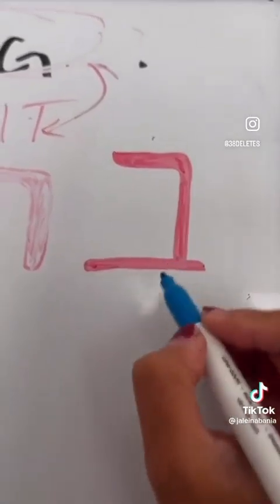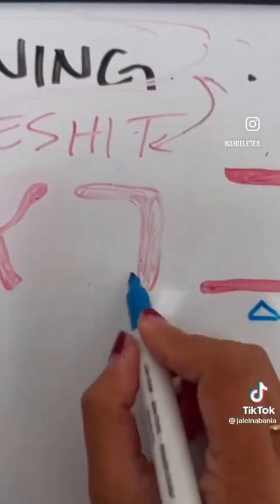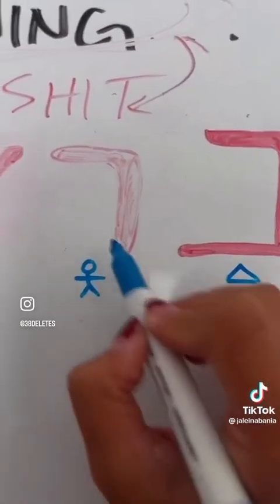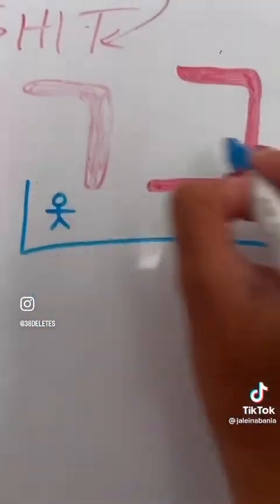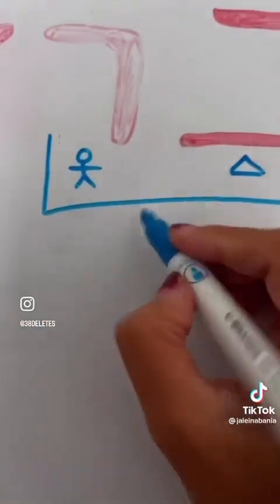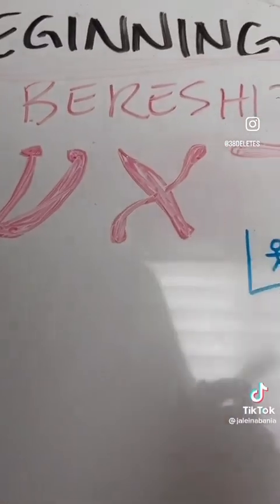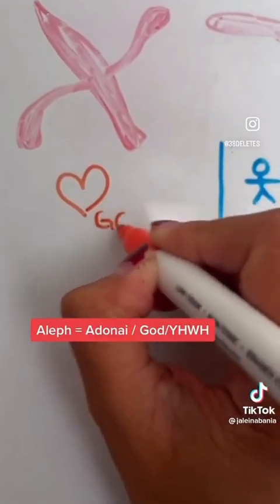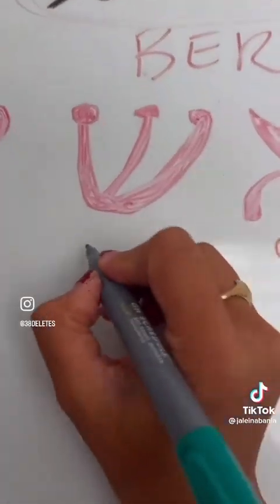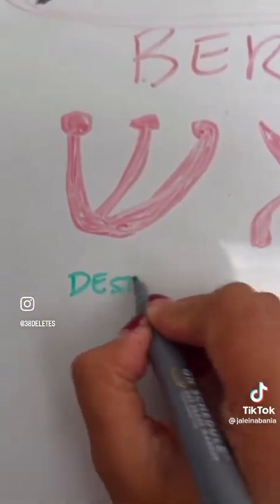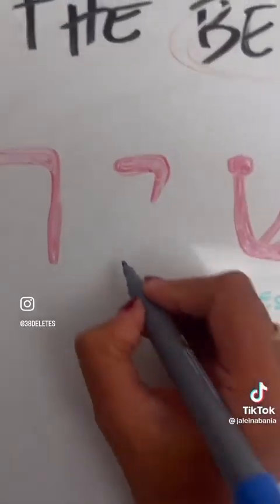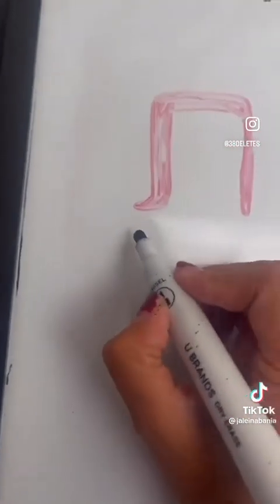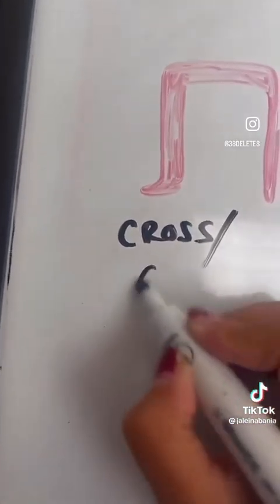The letter Beit, or B, means tent. And the letter Resh, or R, means the chief, the head chief. Together, B-R is read as bar, and together it means son. The letter Aleph is kind of like a vowel, and it means Adonai — so we'll do a heart for God. The letter Shin means to destroy — it looks like a claw, so that's how I remember it. This character means hand — the letter Yod. And this last character is Tav, which is T, and it means cross or covenant.